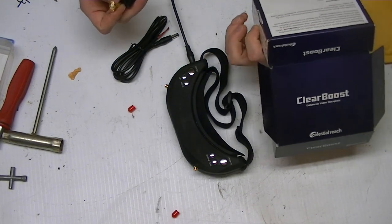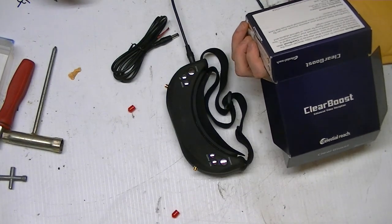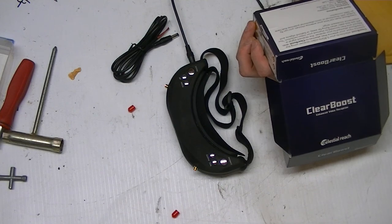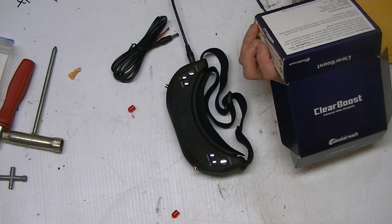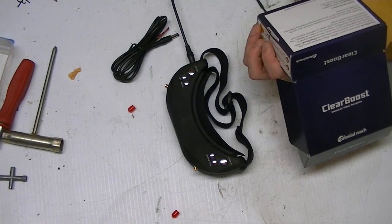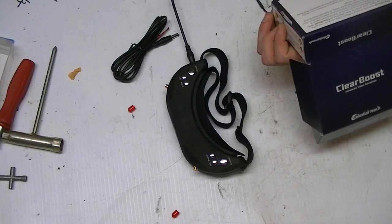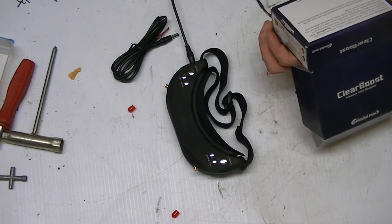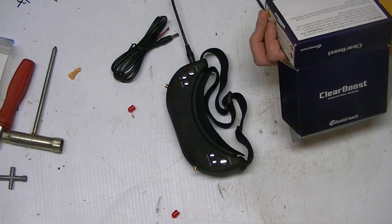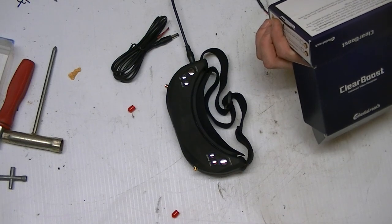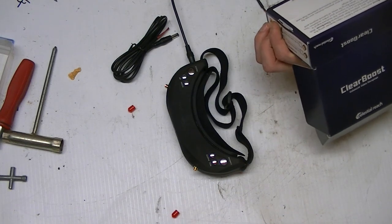ClearBoost attaches to your 5.8 gigahertz video receiver using antenna input. Your antenna then attaches to ClearBoost. With ClearBoost enhanced to your receiver, the receiver signal is filtered and then boosted to improve your video reception. You will see less static when flying far away or behind objects. Experience increased range.